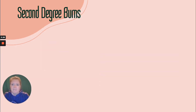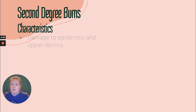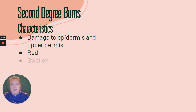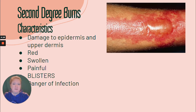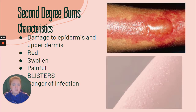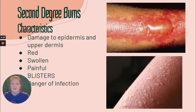A second degree burn — characteristics include damage to the epidermis and the upper dermis. It's red, swollen, and painful, and the key thing is there are blisters. Since there is damage beyond the epidermis, there is danger of infection. If you see blistering, that indicates a second degree burn.